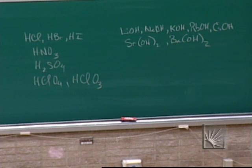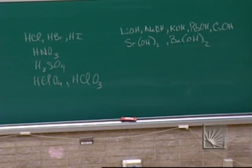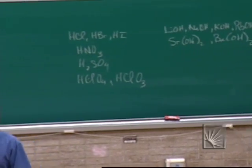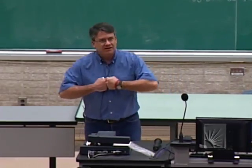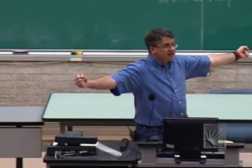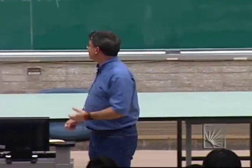So these are the 14: seven strong acids, seven strong bases. Anything else is weak. So we go to this problem — HCl is a strong acid. When you put it in water, if it's strong, it breaks apart into its ions. So what's the concentration of hydrogen ions if I just had 0.5 molar HCl? It's 0.5. A strong acid or base completely breaks apart and gives you ions. A weak acid doesn't completely break apart.